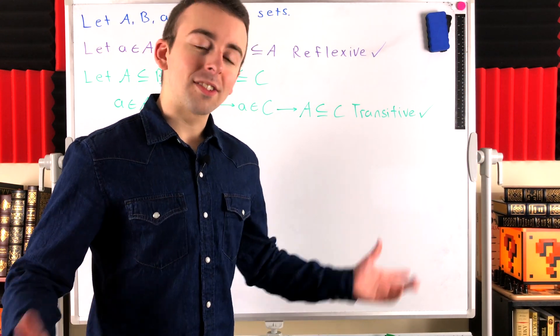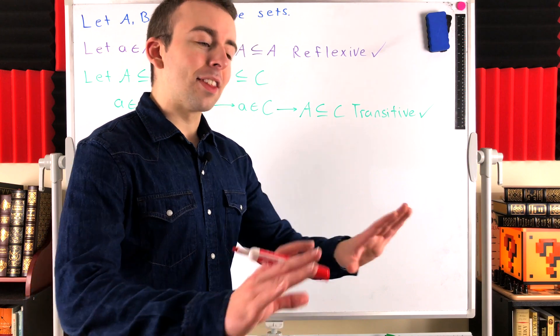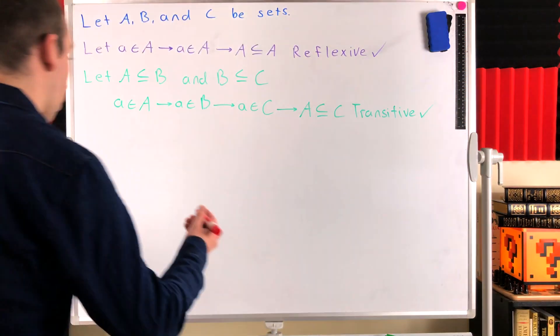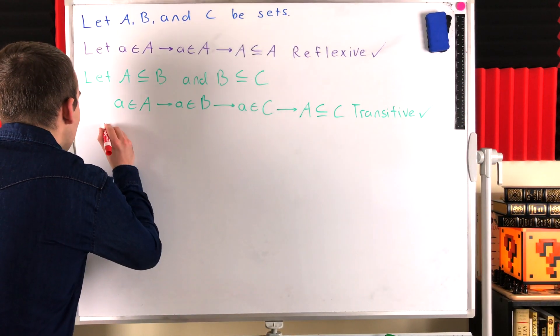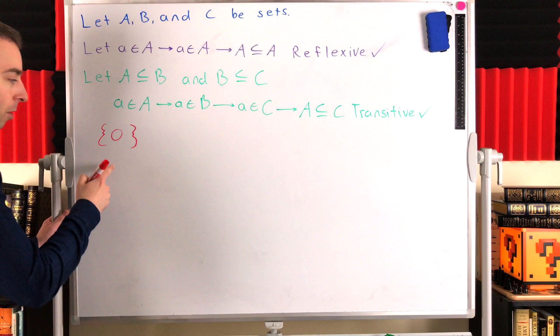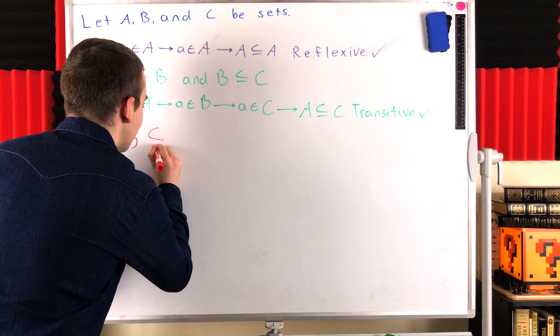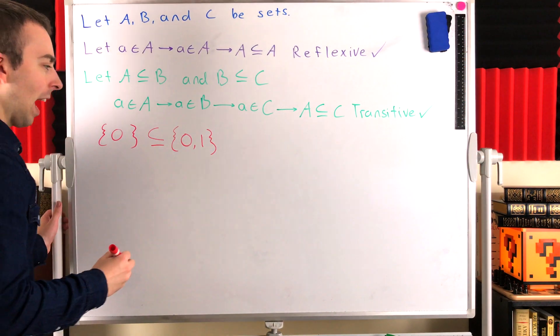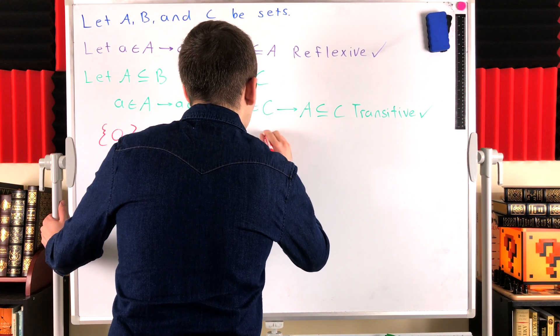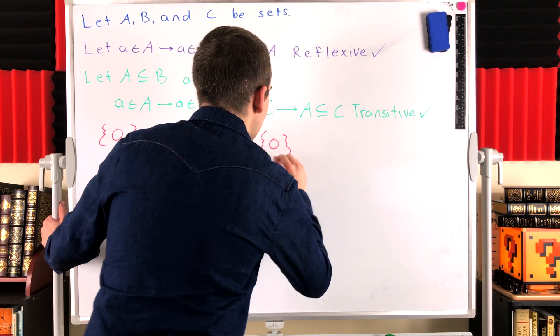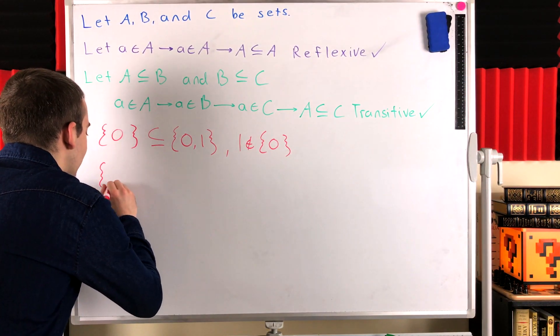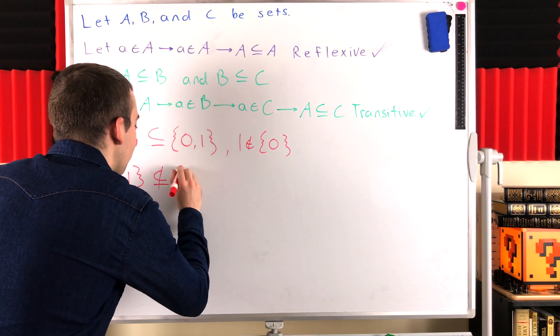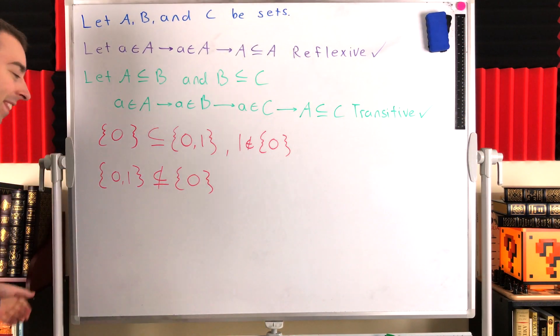To show that that's not true for all sets, as in it's not the case that it holds in general, all we have to do is provide a counterexample. For counterexample, check this out. Consider the set containing 0. Certainly, the set containing 0 is a subset of the set containing 0 and 1. However, 1 is not an element of the set containing 0. So, it's not the case that the set containing 0 and 1 is a subset of the set containing 0.